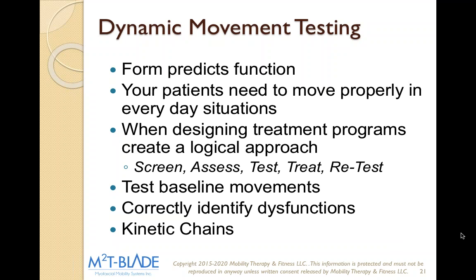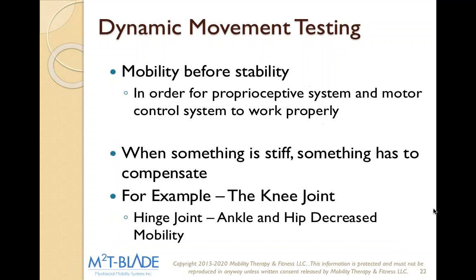With this, we test baseline movements and find our immobility patterns, correctly identify a dysfunction that could lead to pain, and identify which kinetic chains are restricted and why our clients are experiencing pain. We need to create a mobile pattern before we create a stable mobile pattern. When something is stiff, something has to compensate — like we've talked about plenty of times with the knee joint.